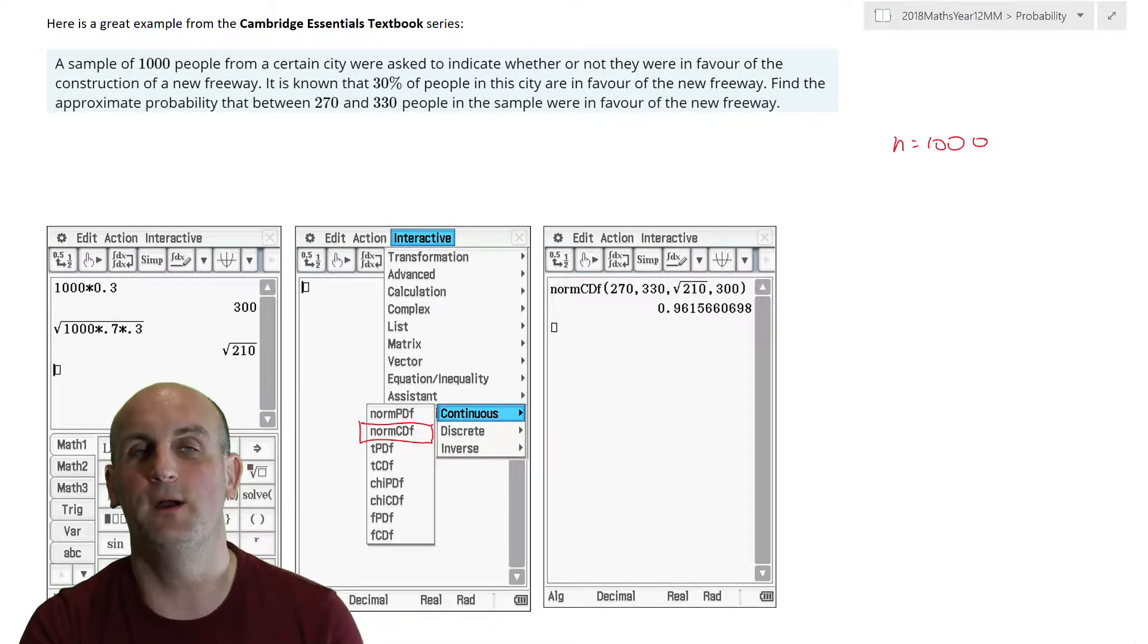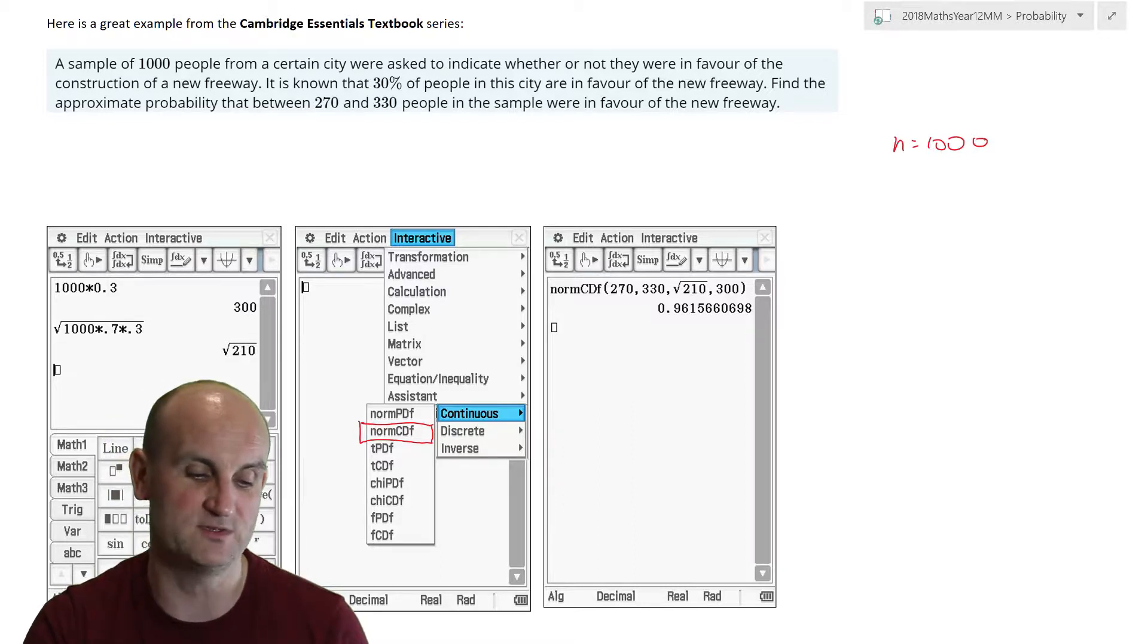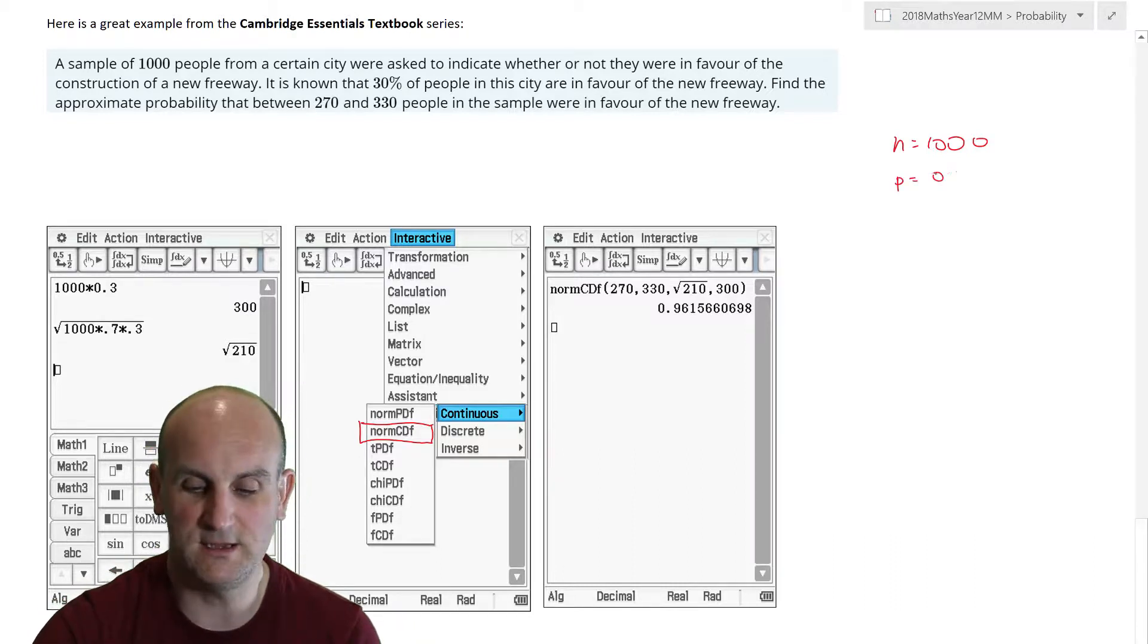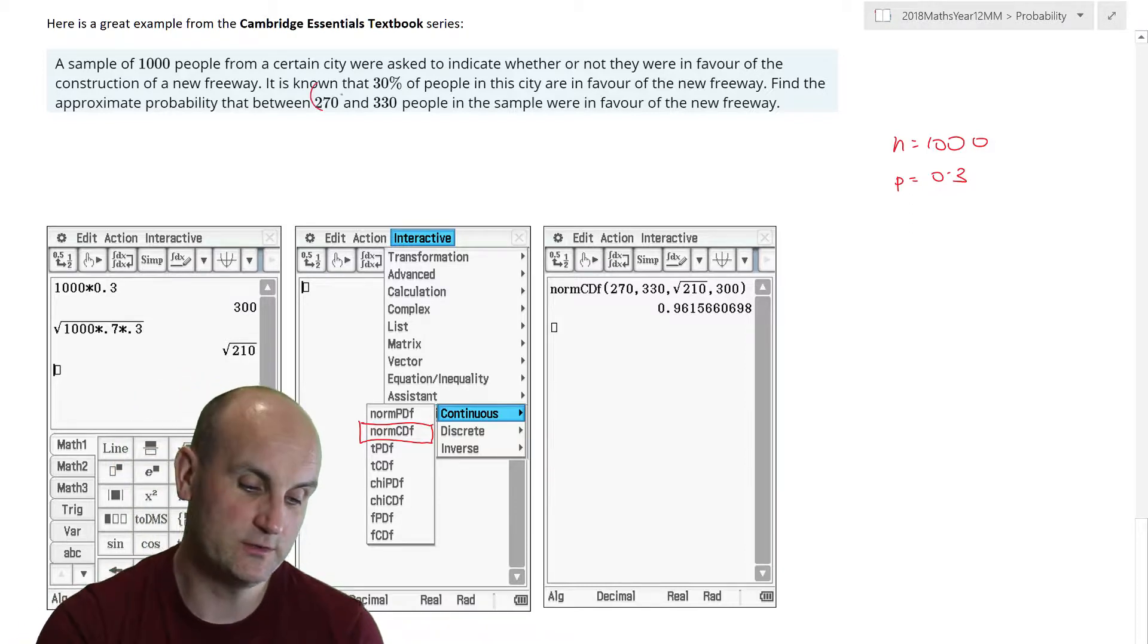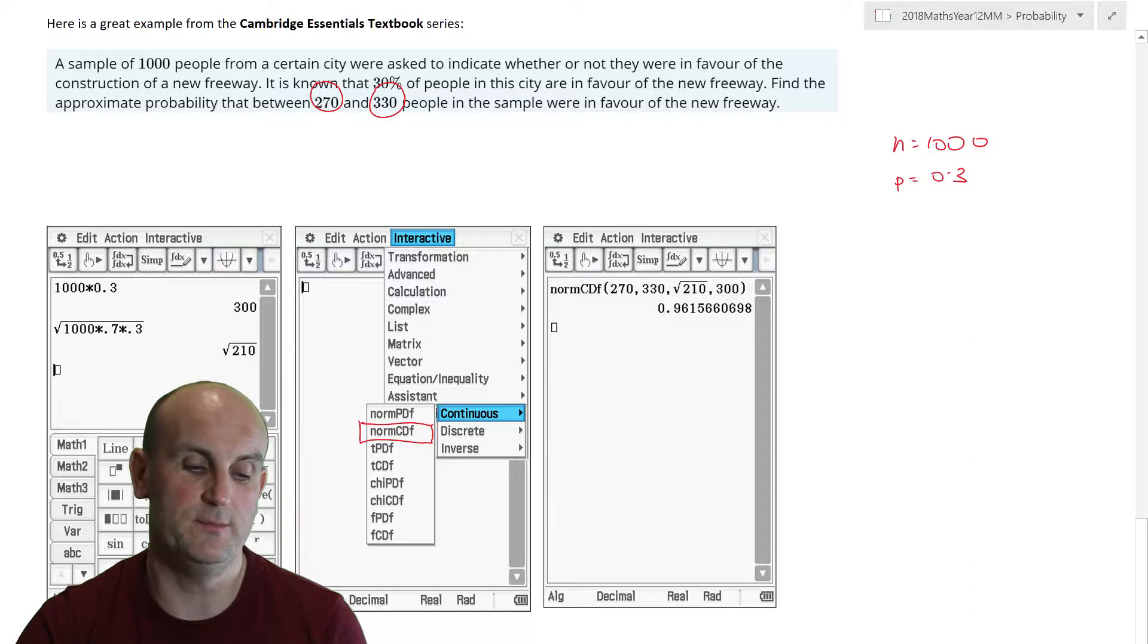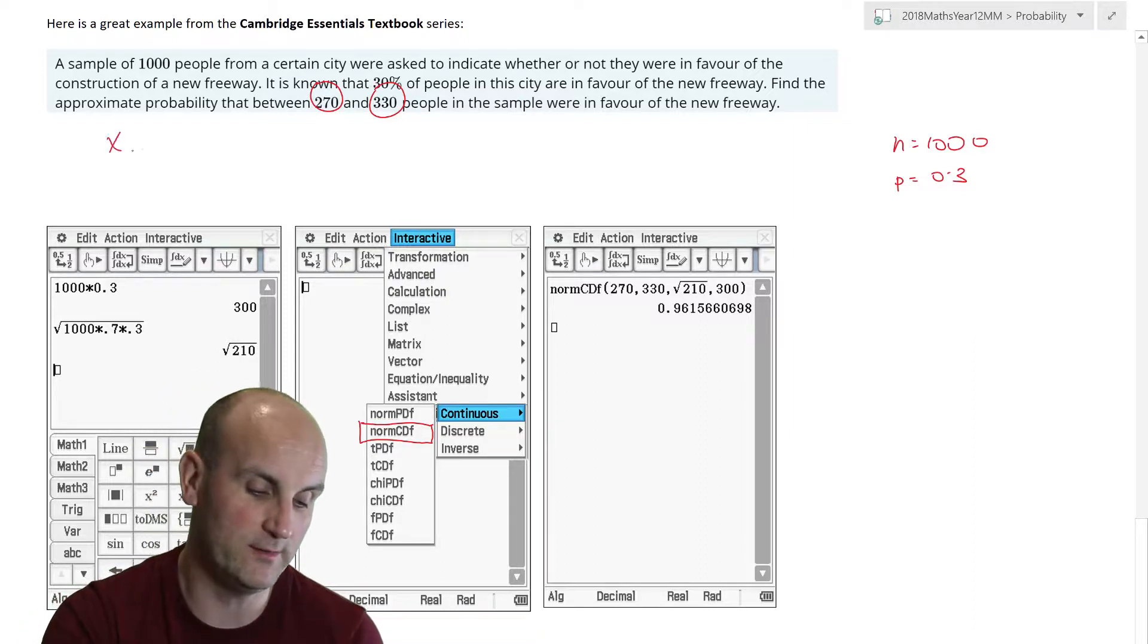Were asked to indicate whether or not they were in favour of the construction of a new freeway. Now, I now know this is binomial, because they were asked whether they were in favour, which would imply they would not be in favour. So there are two outcomes. It is known that 30% of people in the city are in favour of the new freeway. The probability of success is now 0.3.